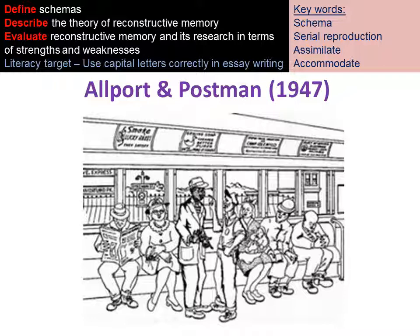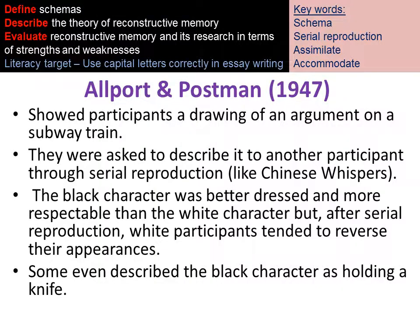Allport and Postman provides another example of a supporting study. They showed participants a picture and asked them to do a serial reproduction task, describing what the picture looked like to another participant. In the original picture, the black character is very well dressed and more respectable-looking than the white character. However, after the serial reproduction task, participants recalled that the white person in the picture was better dressed and it was the black person who looked less respectable. Some participants even described the black character as holding a knife.